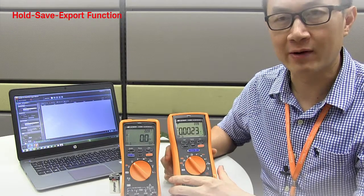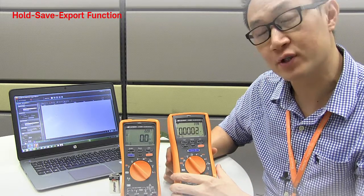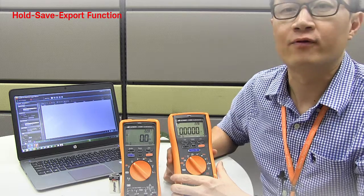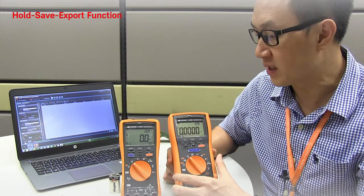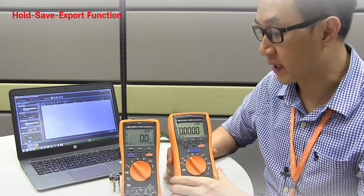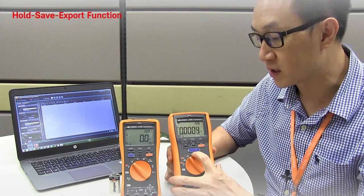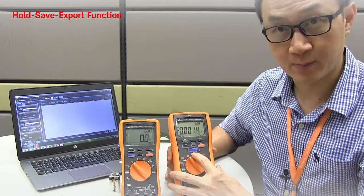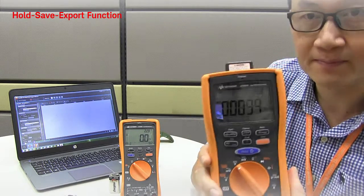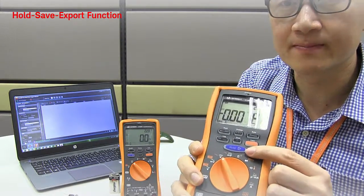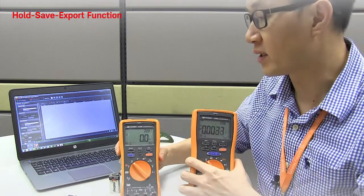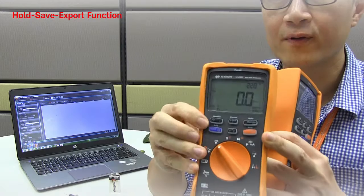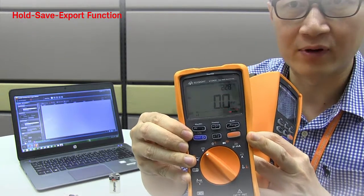Hello again. Now I just want to show you the features for the new products U12-41C and U12-81A and U12-82A, which is what we call the one-click hold, save, and export functions. You can see over here the blue buttons for the U12-81A and also the blue buttons over here for the U12-41C and U12-42C.